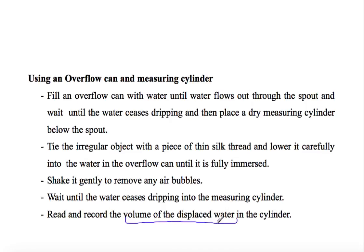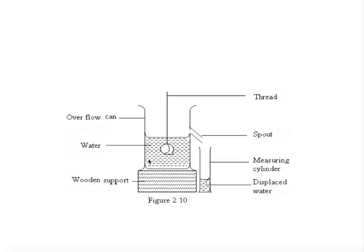As seen in the figure, the overflow can is filled to the spout level. When we place the irregular object inside and fully immerse it, some water flows into the measuring cylinder because the irregular object takes up space in the water. We read the value of displaced water in the measuring cylinder — this volume equals the volume of the irregular object. We can measure volume using a measuring cylinder or an overflow can.